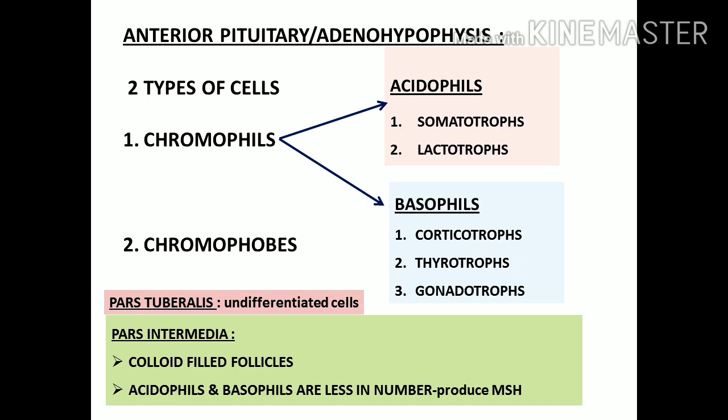The anterior pituitary gland, especially the pars distalis, consists of various types of cells. Basically there are two types: chromophils and chromophobes. Chromophils can be further categorized into acidophils and basophils — acidophils take acid stain and basophils take basic stain. Both acidophils and basophils are chromophils because they can take up stain, owing to fine granules in their cytoplasm. Among acidophils, somatotrophs secrete somatotrophic hormone (growth hormone).